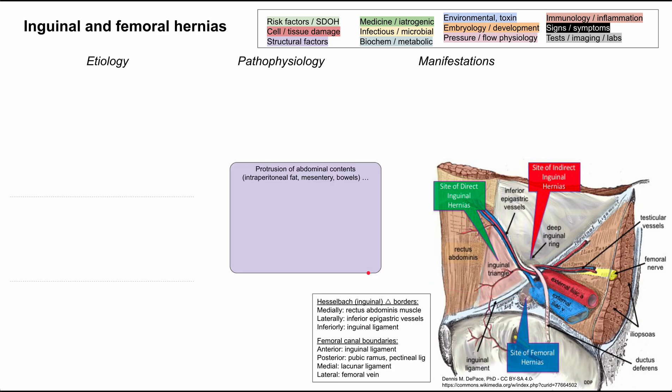We'll start with the definition of these hernias. These hernias are a protrusion of abdominal contents through a specific structure. The abdominal contents can include intraperitoneal fat, mesentery, and/or bowels. When they go through a specific structure, we designate them according to where they are protruding through.